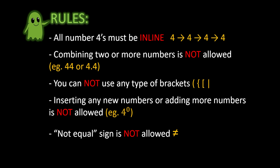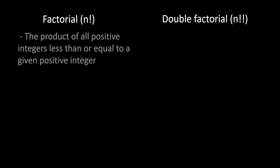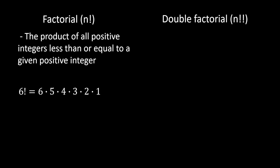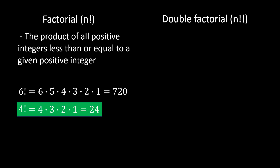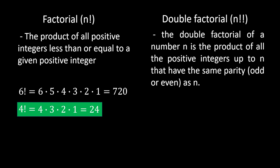Before I start solving this problem, I would like to do a quick reminder about factorial and double factorial, because I'm going to use those in my solution. Factorial is basically a product of all positive integers less than or equal to a given positive integer. For example, 6 factorial equals 6 × 5 × 4 × 3 × 2 × 1, which gives us 720. I will use 4 factorial, which is 4 × 3 × 2 × 1, equal to 24.